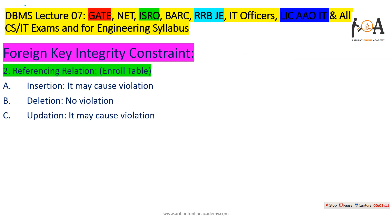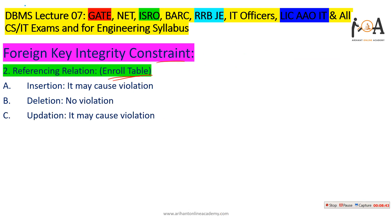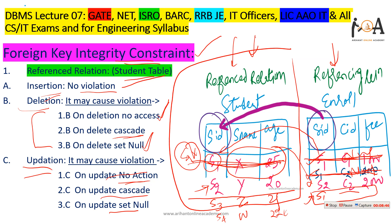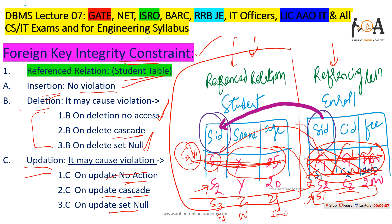Now for the enrolled table (referencing relation): insertion may cause a violation because you could be adding data for a student ID that doesn't exist in the student table, violating integrity. On deletion from the enrolled table, there is no violation because we are only removing a reference, not changing the referenced data. On updation in the enrolled table, it may cause a violation if the updated foreign key value doesn't exist in the student table.